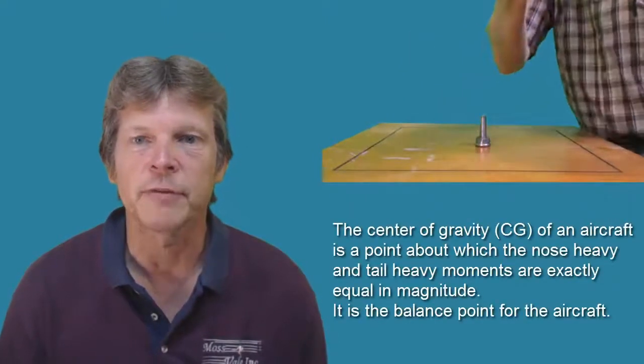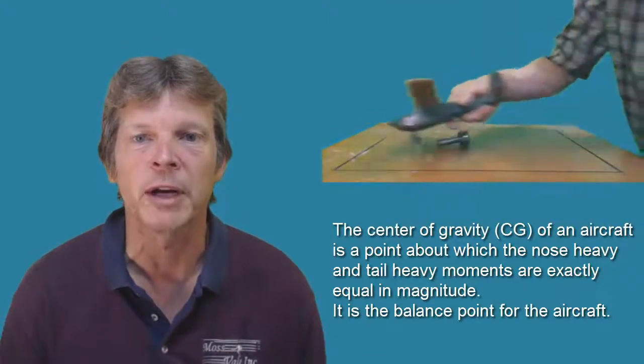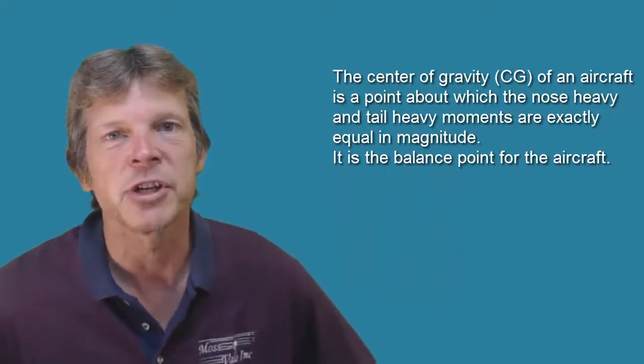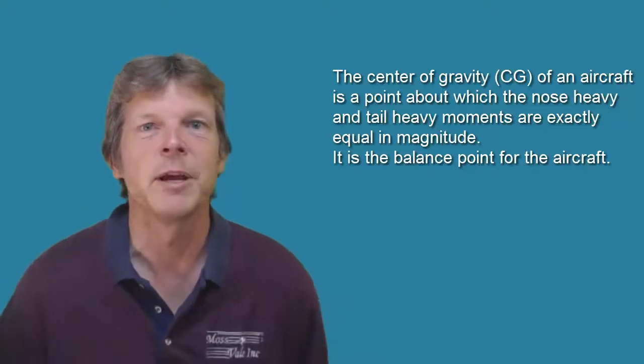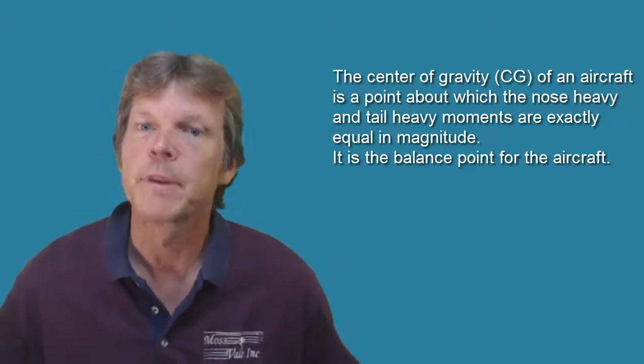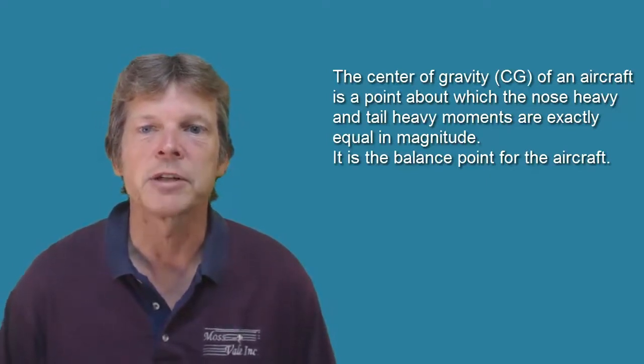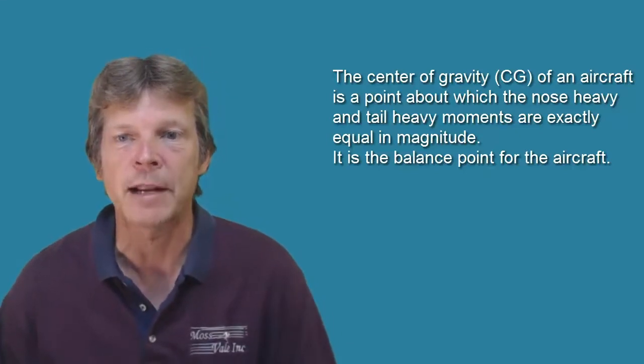The center of gravity of an aircraft is a point about which the nose heavy and tail heavy moments are exactly equal in magnitude. Let me say that definition again. It sounds real complicated. It was a lot simpler to say, put an airplane on there and see where it balances. But the center of gravity of an aircraft is a point about which the nose heavy and tail heavy moments are exactly equal in magnitude.